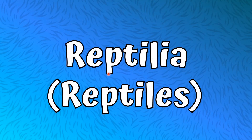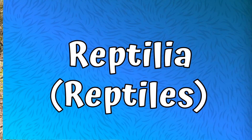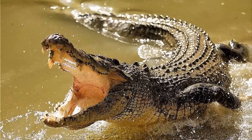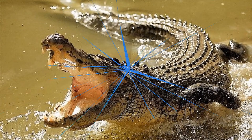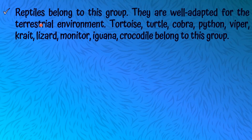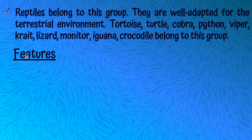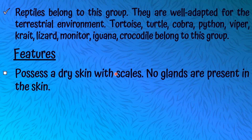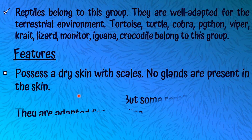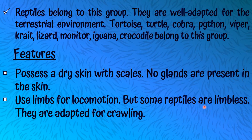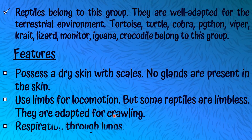Let's talk about our third group: Reptilia, or Reptiles. They are well adapted for the terrestrial environment. Tortoise, turtle, cobra, python, viper, krait, lizard, monitor, iguana, and crocodile belong to this group. Features of Reptiles: they possess a dry skin with scales. No glands are present in the skin. They use limbs for locomotion, but some reptiles are limbless and adapted for crawling, like snakes, python, and cobra. Respiration is through lungs.